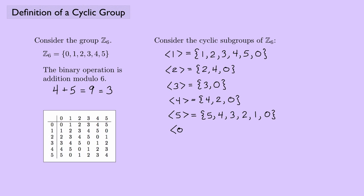Finally, the element 0 just gives me 0 — not very exciting. What I want you to notice is that the cyclic subgroups generated by 1 and 5 generate the entire group. In other words, all the elements in those subgroups are the exact same as the elements in Z6 — you can find 0, 1, 2, 3, 4, and 5 in each of them.